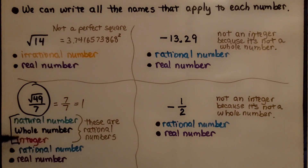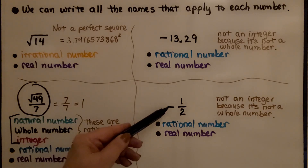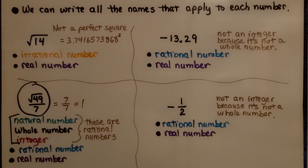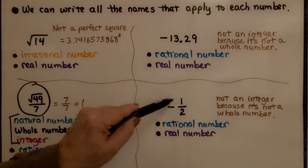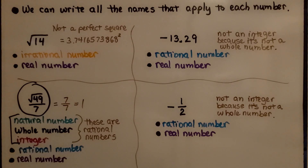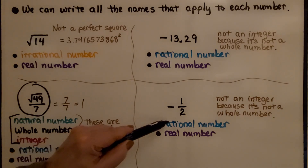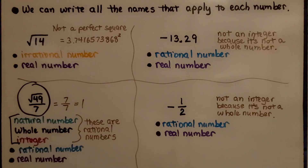We don't necessarily have to name each subset because these all come under the heading of rational numbers. Here we've got negative one half. It's not an integer because it's not a whole number — integers are negative and positive whole numbers. But it is a rational number because rational numbers can be written as fractions. So it's a rational number and a real number.